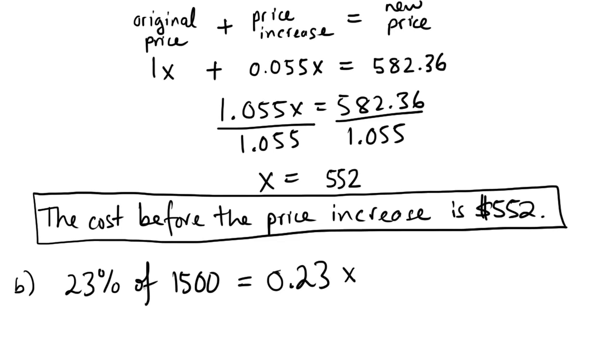In mathematics, 'of' kind of means multiply. So when you say of 1500, we should be multiplying there. So 0.23 times 1500. Just do that in the calculator. That's 345. Like I said, we should write a little simple sentence. The amount spent on rent is 345 dollars.